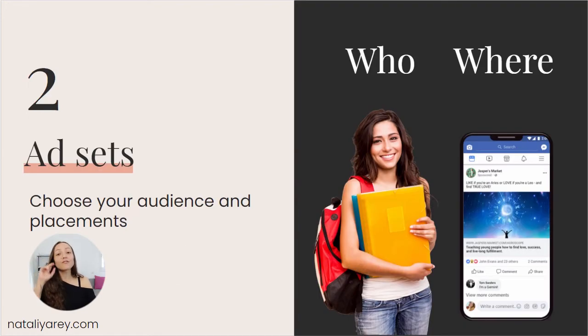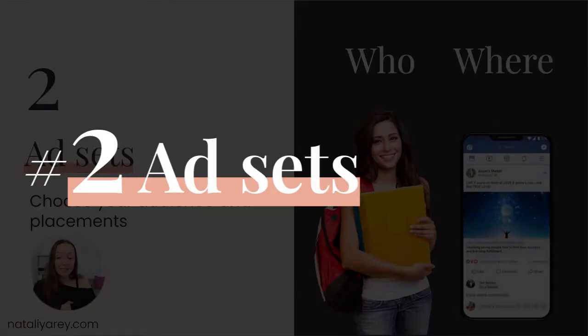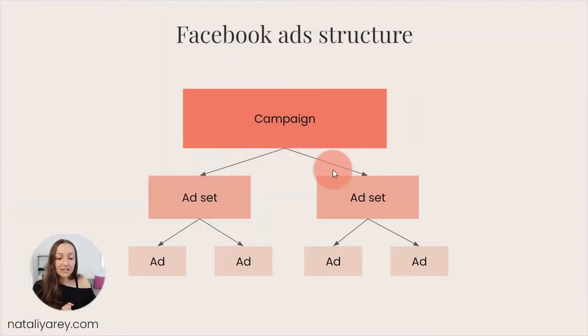Once you define your campaign, you want to create your ad sets. Ad sets are the second tier — the second level under a campaign. A campaign will have several different ad sets. The goal of ad sets is to choose your audience and your placements — meaning who do you want to target, and where do you want them to see your ad? Do you want them to see it on their desktop, on their phone, on their tablet? Choosing where the ad is placed is the purpose of ad sets.